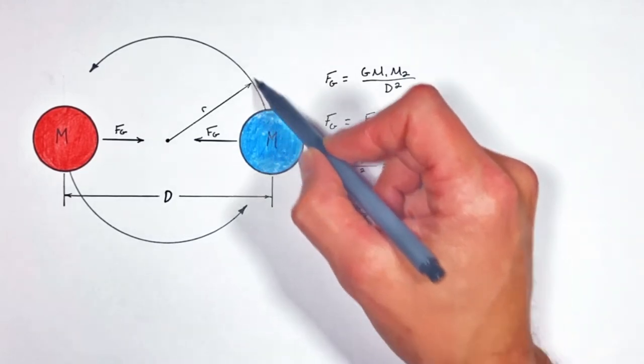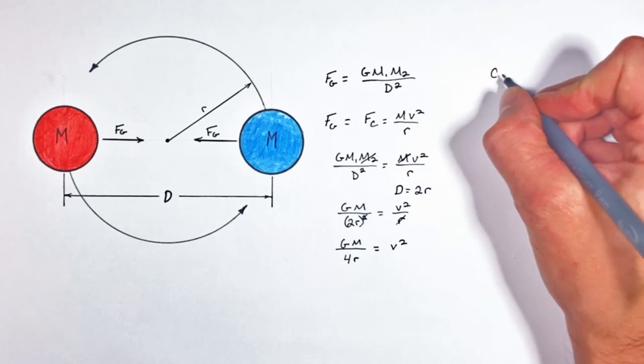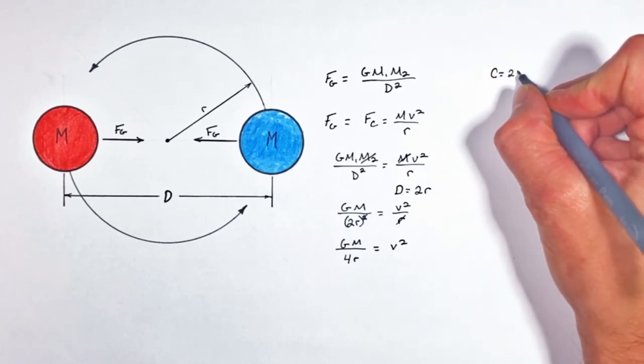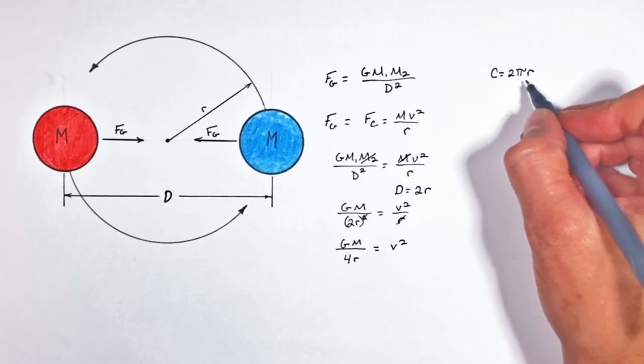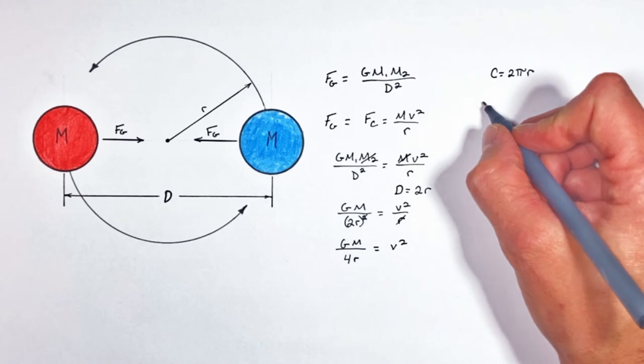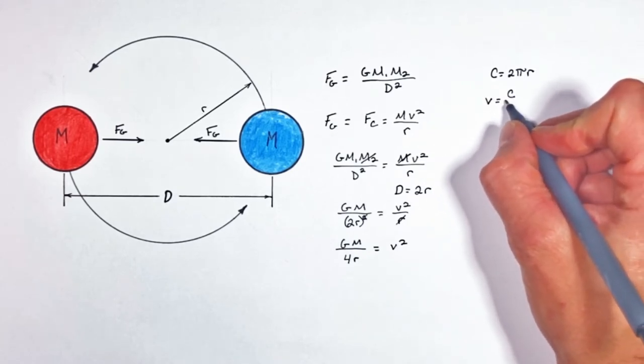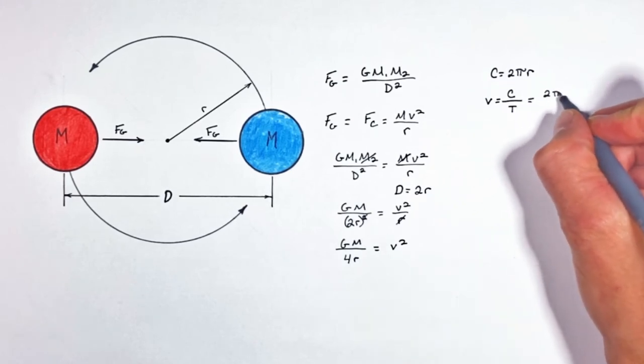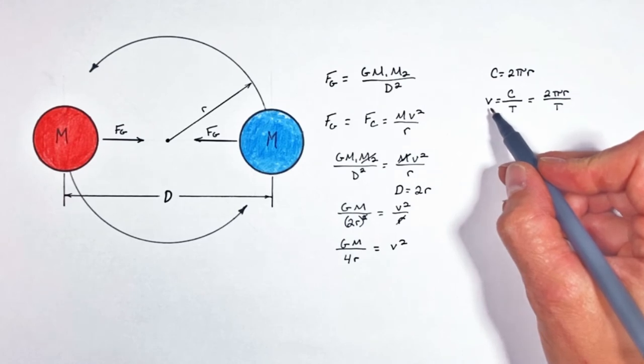Now ultimately these objects are going to move in a circle that has some radius r, so the circumference of that circle is going to be 2πr. Now realize this is nothing other than the distance traveled in a single orbit. So if we treat velocity as though it is equal to distance over time, we now have an expression relating the period to velocity.